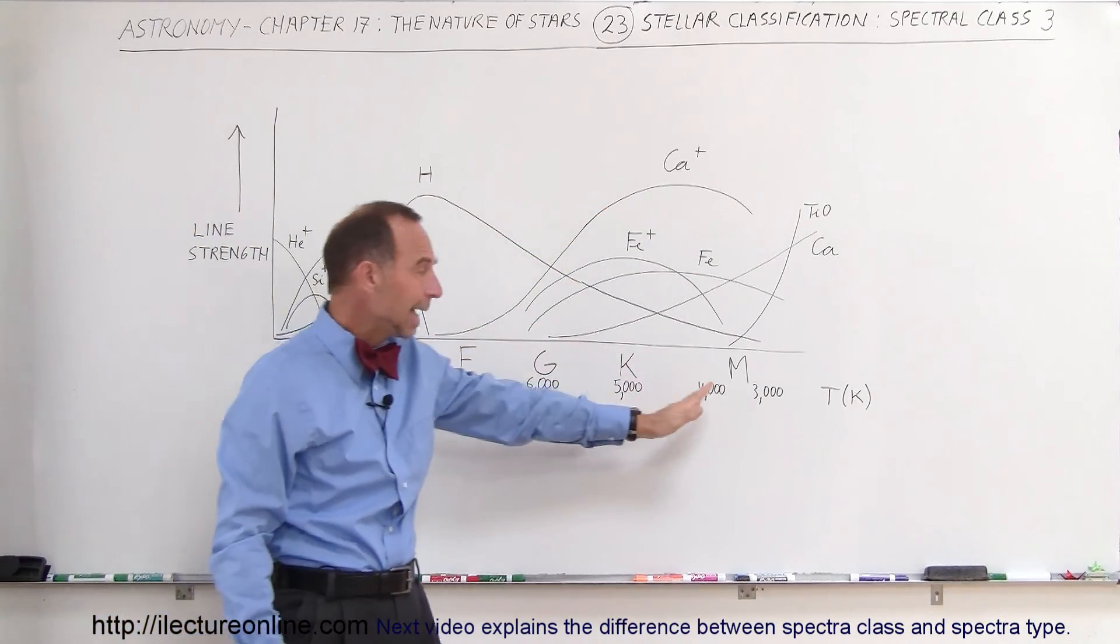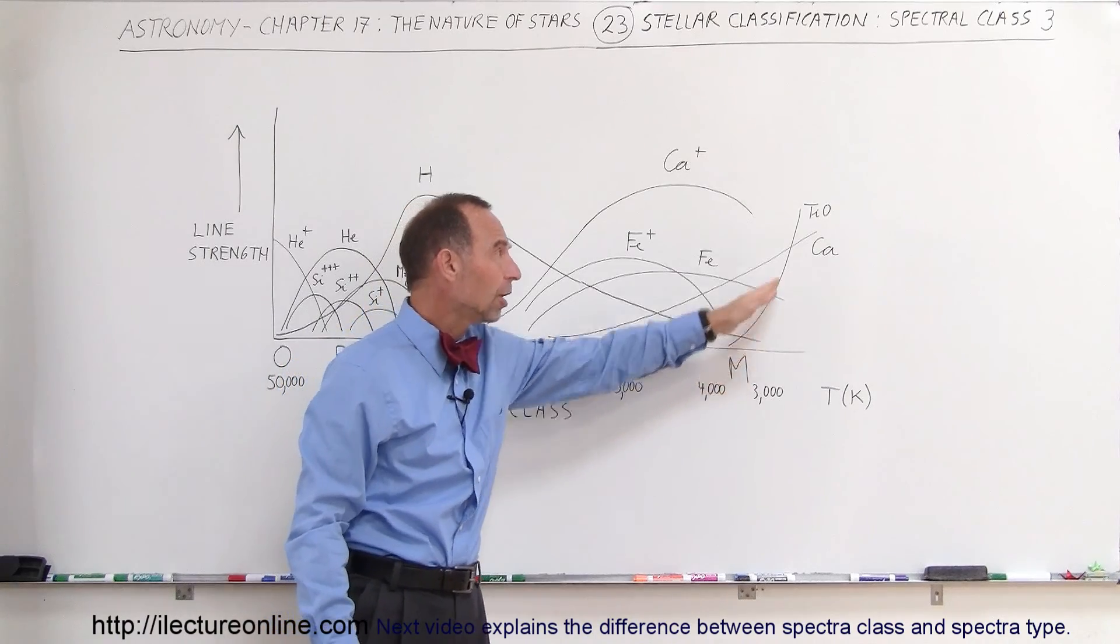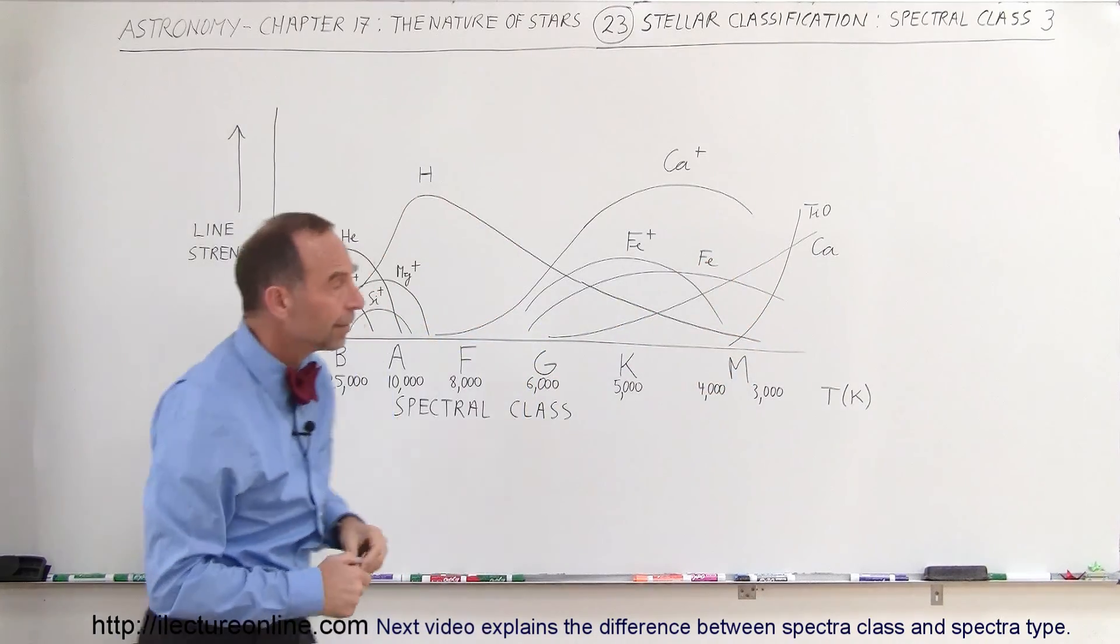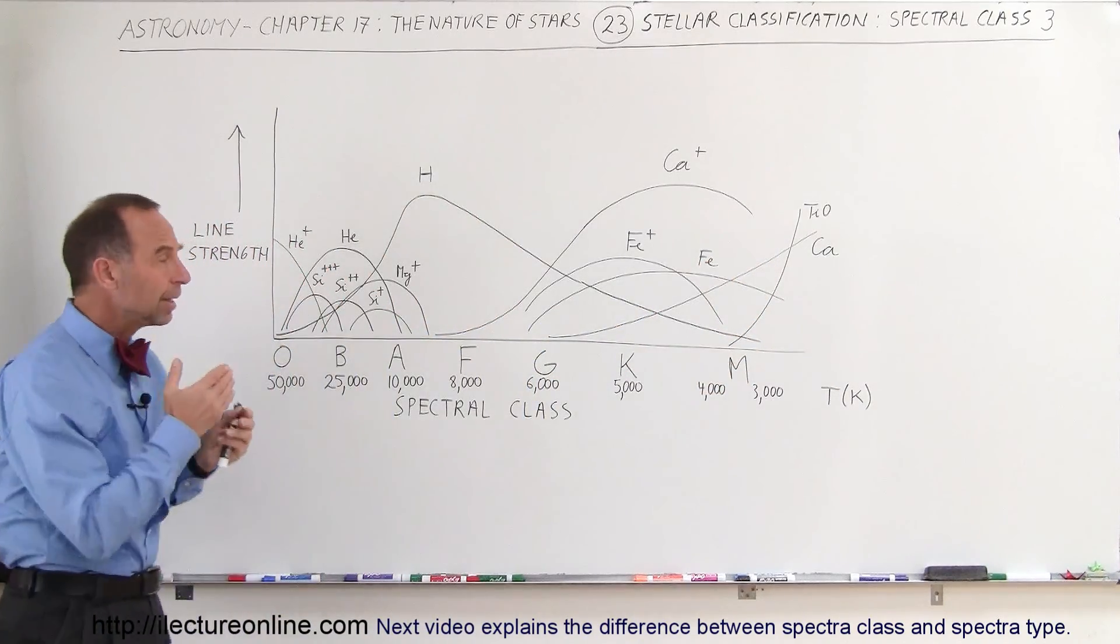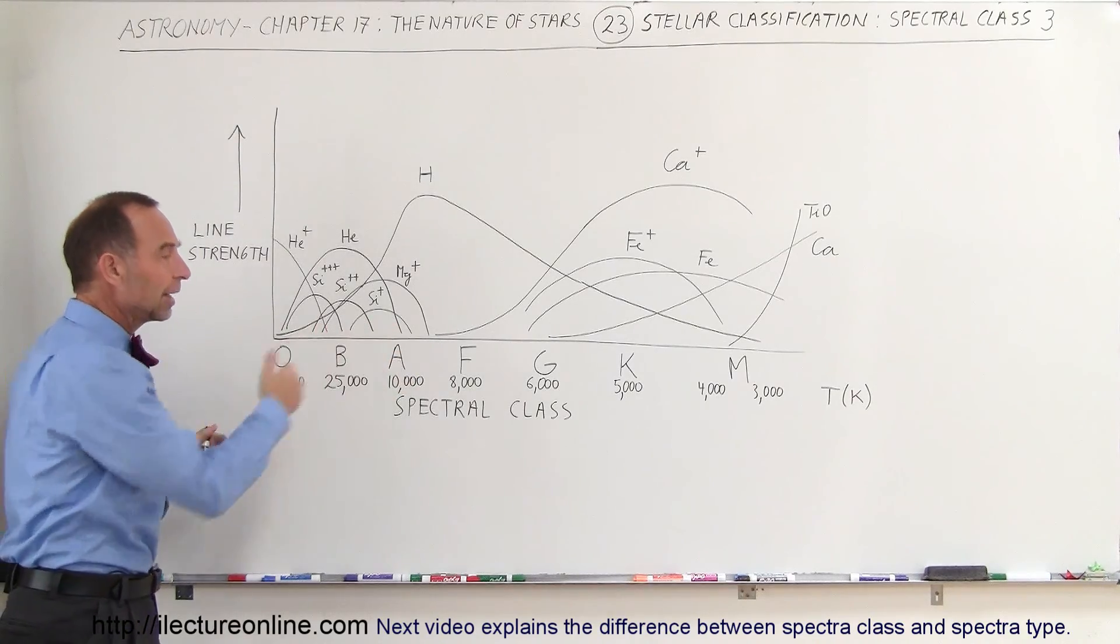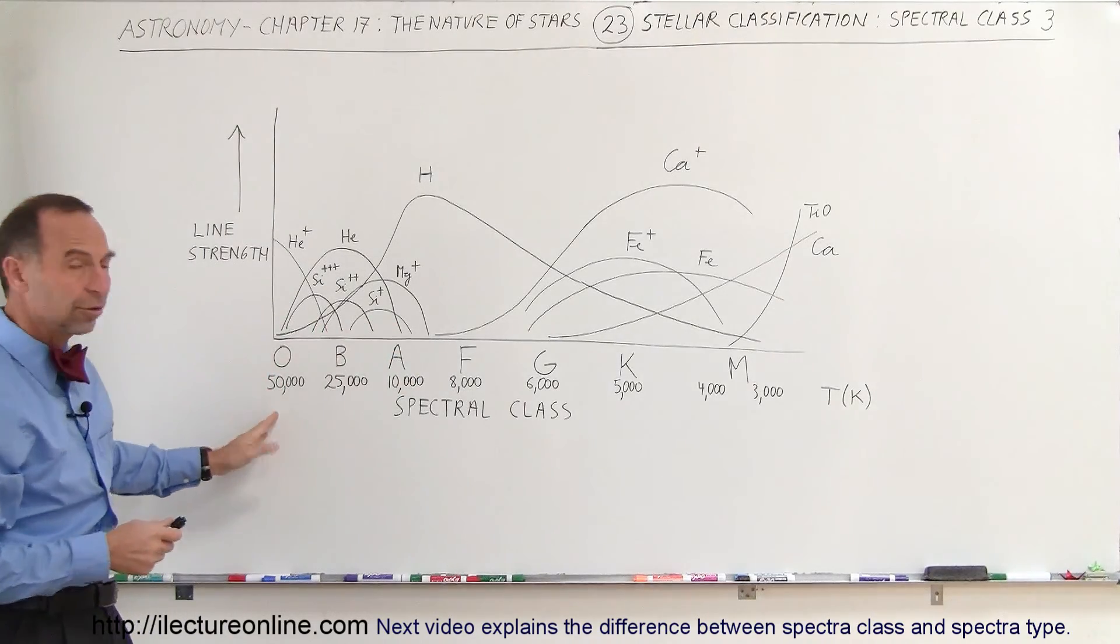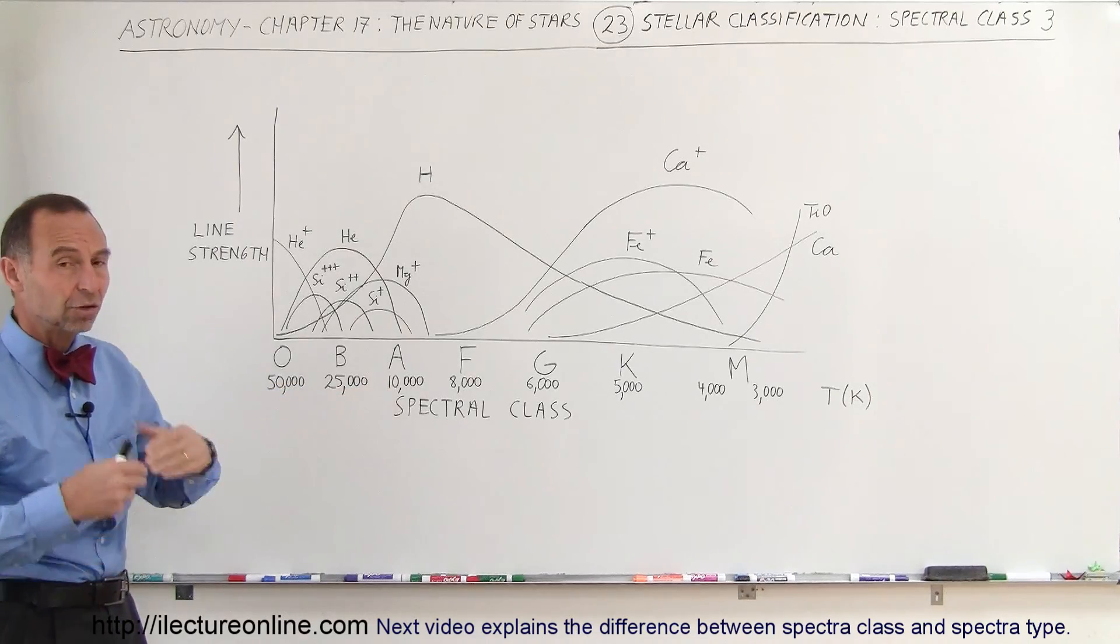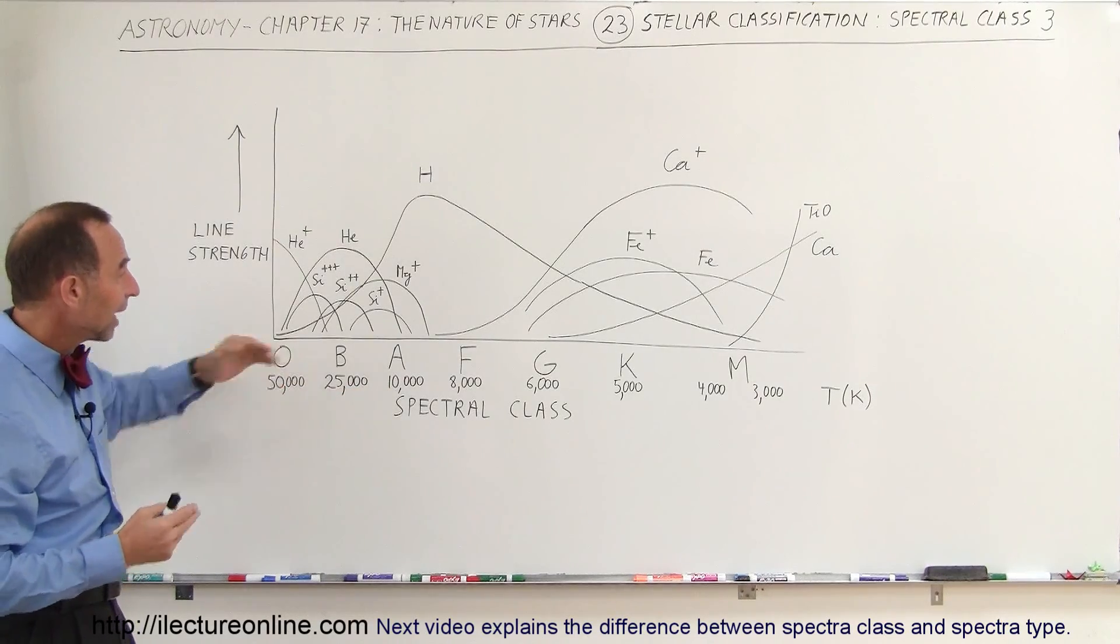When we talk about the M-class stars, we also look for titanium oxide. You can see that depending upon the temperature of the outer layers of the star, the O-class stars are very hot. The B-class and A-class stars are also fairly hot. Because of that, we have different kinds of electron jumps caused by the photons reaching those outer layers.